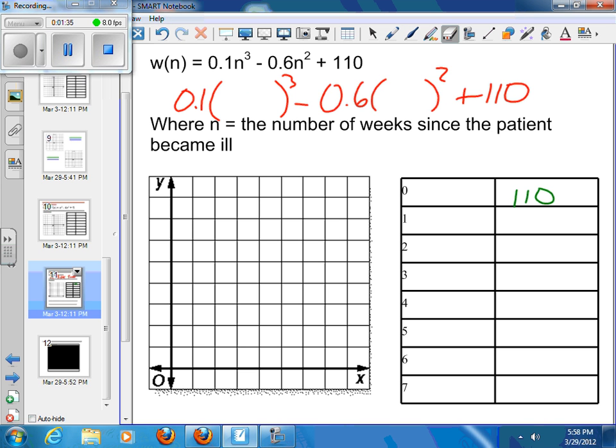So then I can plug in, and I'm going to see what happens at the end of one week. So if I fill a 1 in for there, and I grab my calculator, and I figure out what that's going to be, I end up with a 109.5. So let's put that in my table.